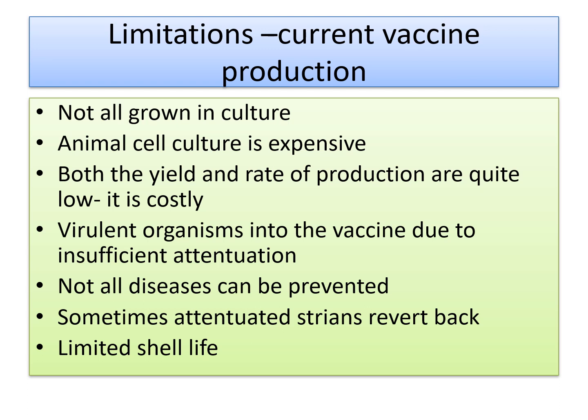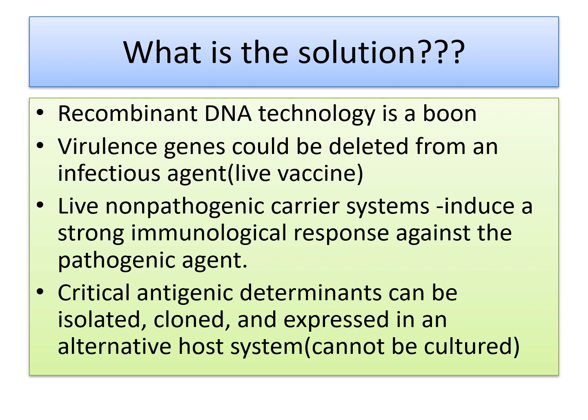Whoever works on this will have to work on these drawbacks — to remove them and make vaccine production advantageous by increasing the shelf life, so that we can have cost-effective vaccine production and they can be grown easily in the lab. The solution to remove all these drawbacks in vaccine production is recombinant DNA technology, which is truly a boon for the life science and medical fields.